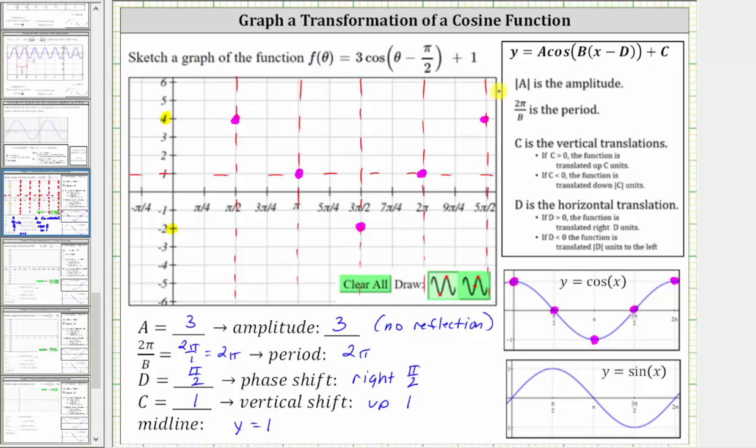Now we can graph the given function. Continuing the graph to the left, we return to the midline at x = 0, and then off the screen, we reach a minimum.